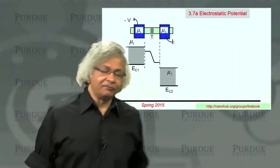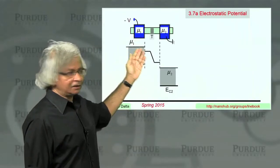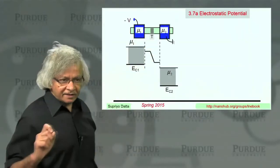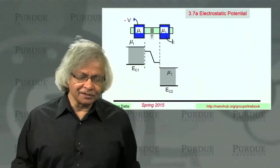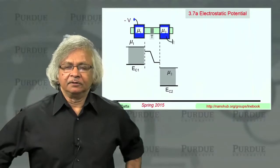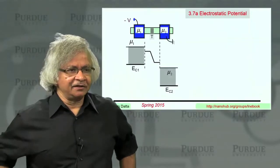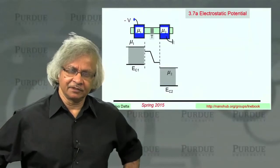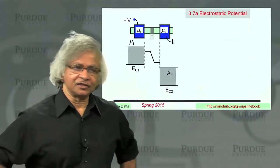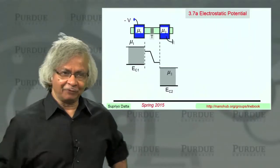So far, we have focused on this electrochemical potential and how it varies inside a device. In this lecture, what I'd like to tell you is about the electrostatic potential. A lot of people would tell you that electrochemical potential is kind of a difficult concept, hard to define out of equilibrium, and that it's much better to stick to the electrostatic potential. I don't quite share that view, and I want to explain why.